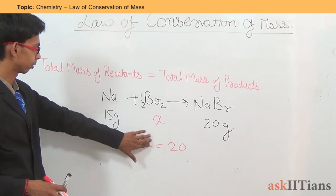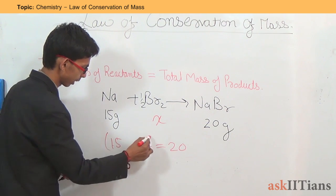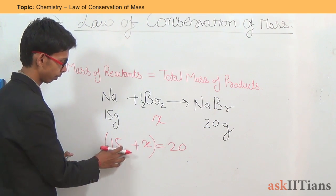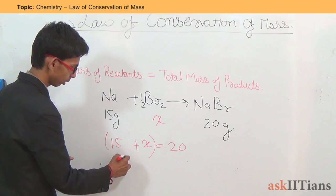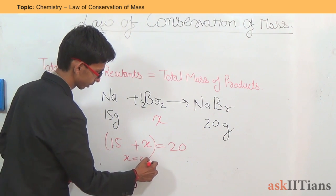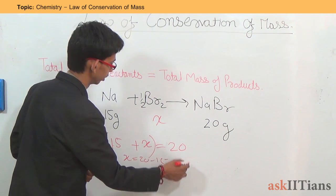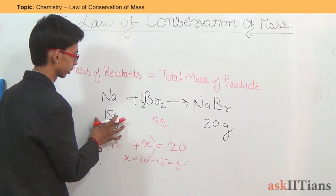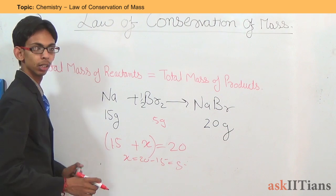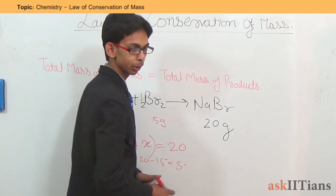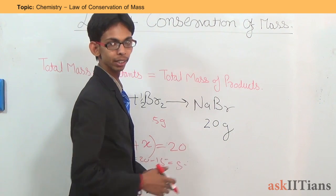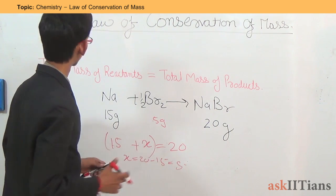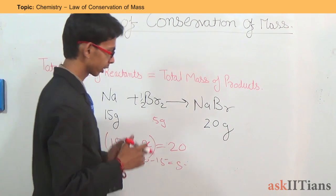According to the law of conservation of mass, the total mass of reactants should equal the total mass of products. So 15 plus x equals 20, or x equals 20 minus 15, which is 5. So 5 grams is the answer — 15 grams of sodium will combine with 5 grams of bromine to form 20 grams of sodium bromide.